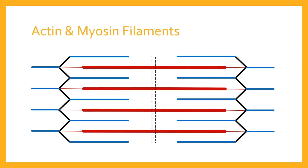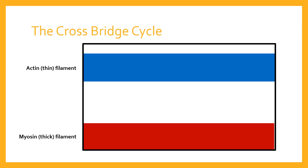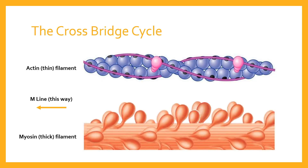Let's zoom into this section where we can see just one actin filament and one myosin filament, so we can get an understanding of what's happening between these two filaments. In our minds, we can then expand this out to the rest of the sarcomere and thereby the rest of the muscle cell. Having zoomed in, we can see the actin thin filament at the top and the myosin thick filament at the bottom. The M-line is towards the left — towards the centre of the sarcomere. Now let's look in a little bit more specific detail at what the actual structure of the actin and myosin filaments looks like.